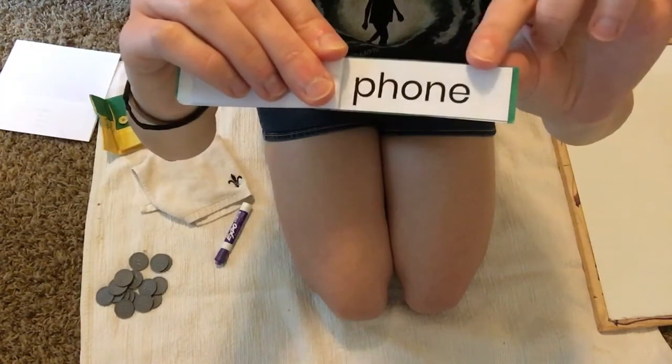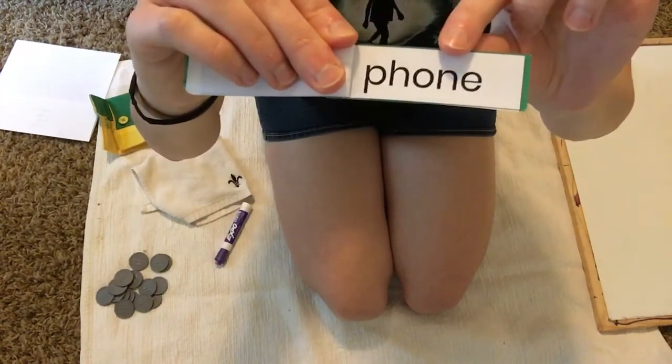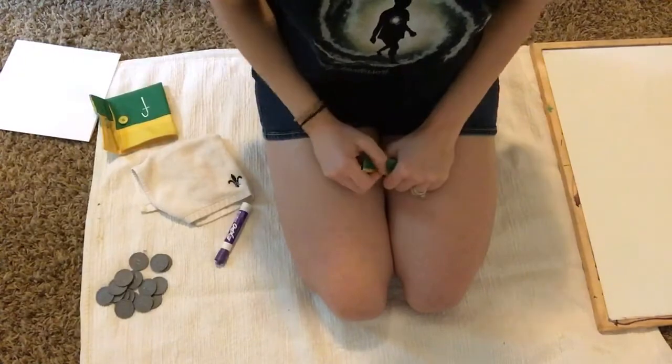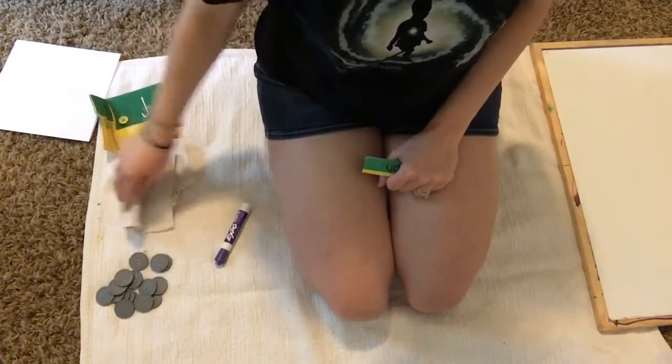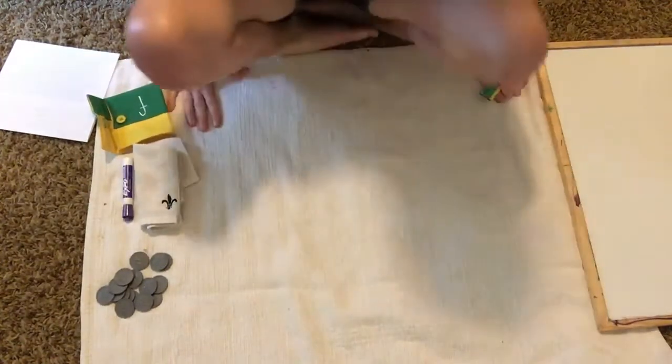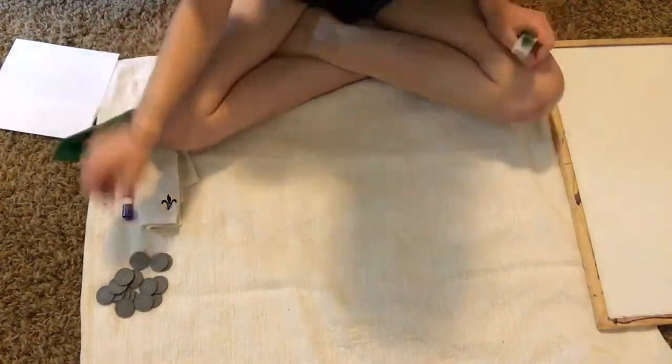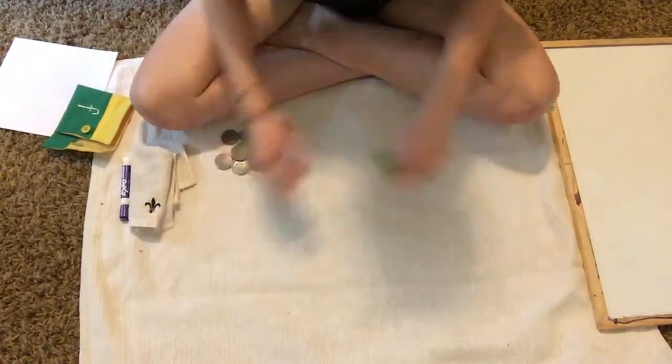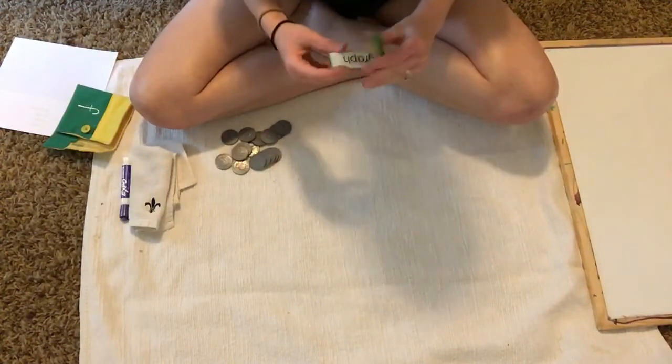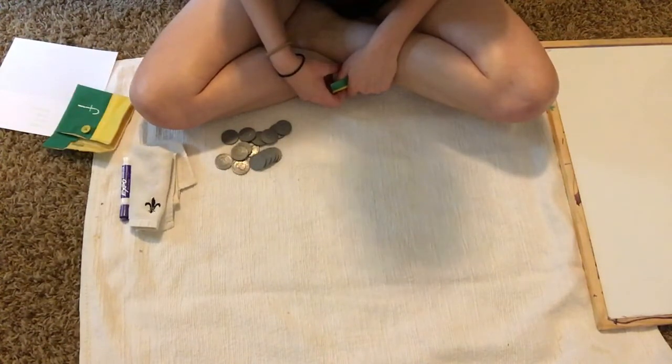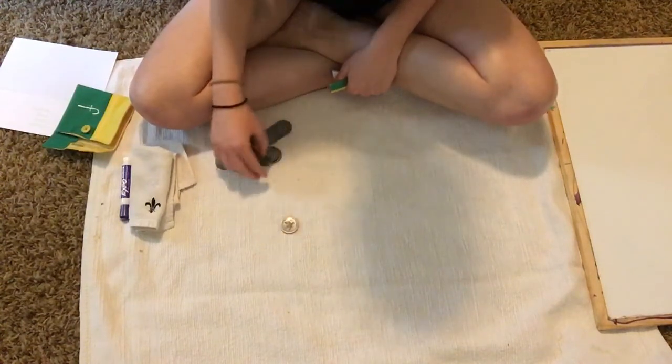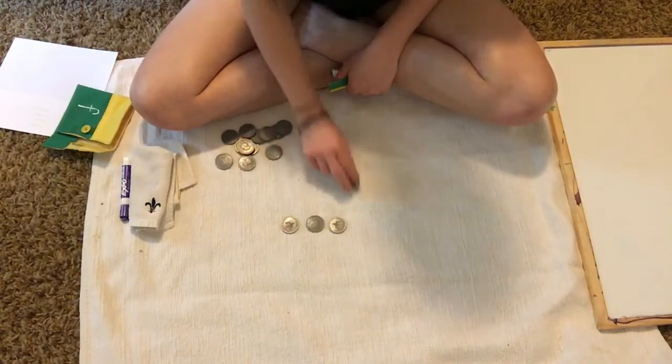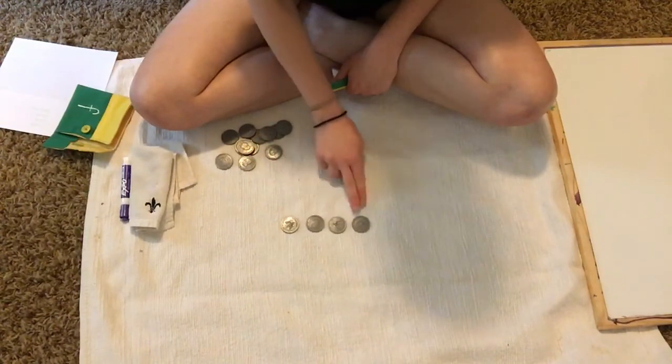Magic E over here. Phone. Okay, let's get out our coins or tokens or beans or buttons, whatever you're going to use, and lay down a coin for every sound that you hear in the word graph.